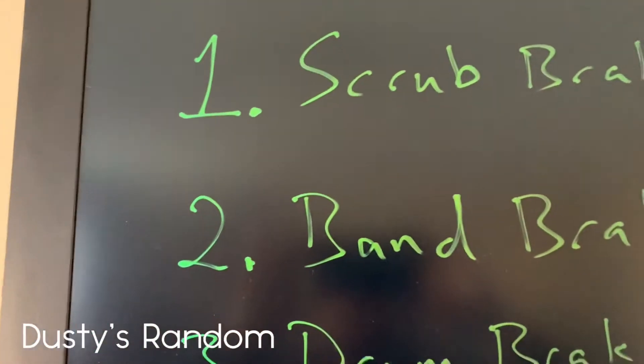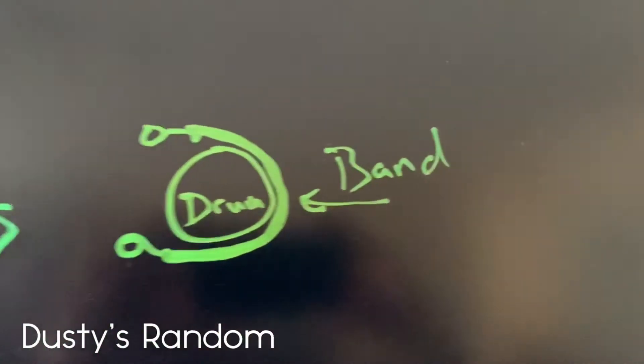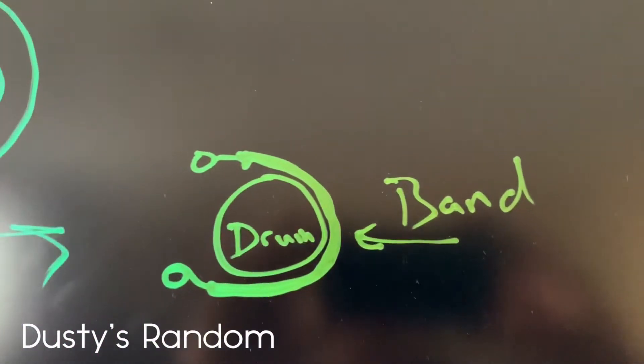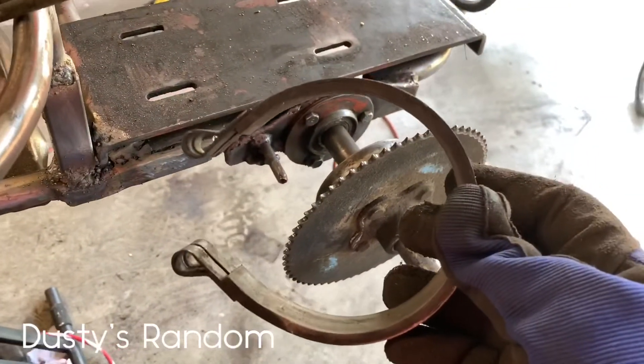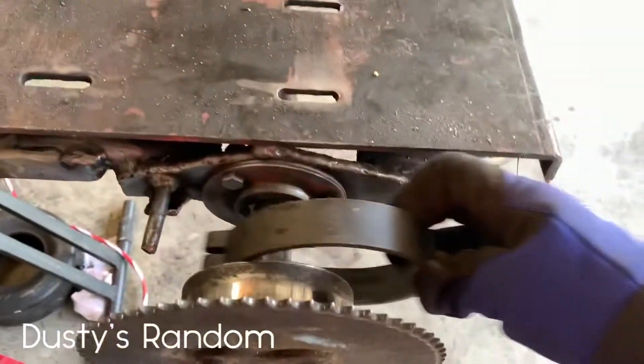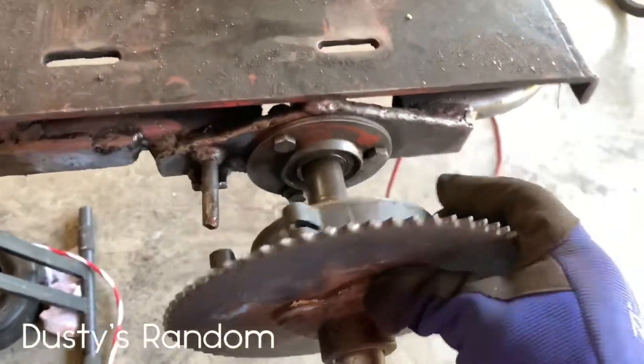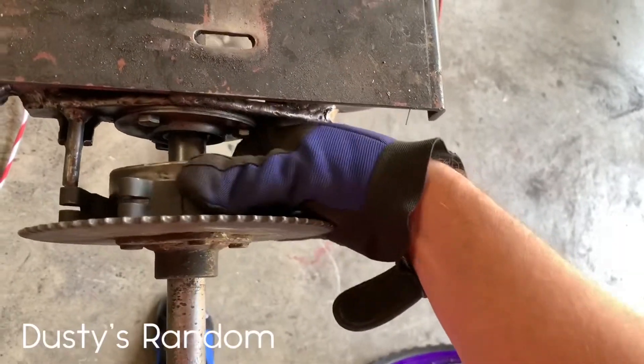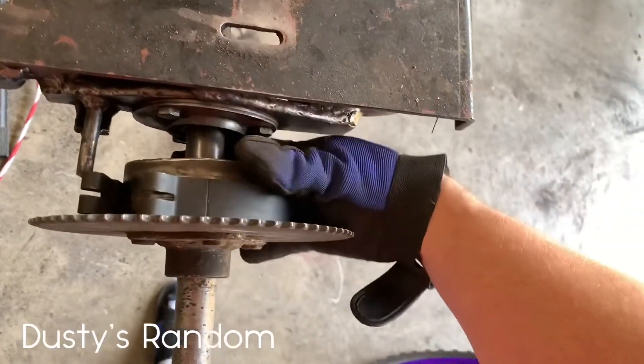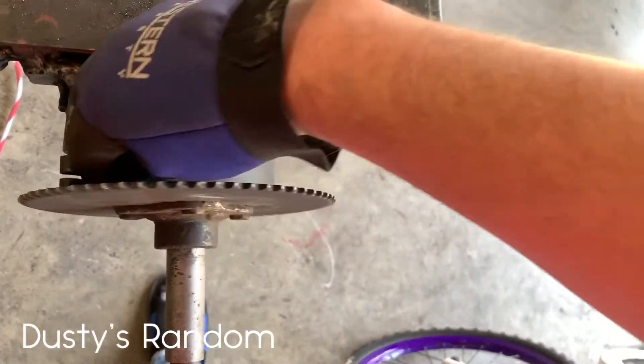After scrub brakes we have band brakes. A very popular option also on inexpensive go-karts. It uses a drum and a band around the drum for friction to slow it down. Here is a band going around the drum. Some people refer to these as drum brakes but they're actually called band brakes. If you have band brakes and have trouble braking, check out my video on band brake fix.